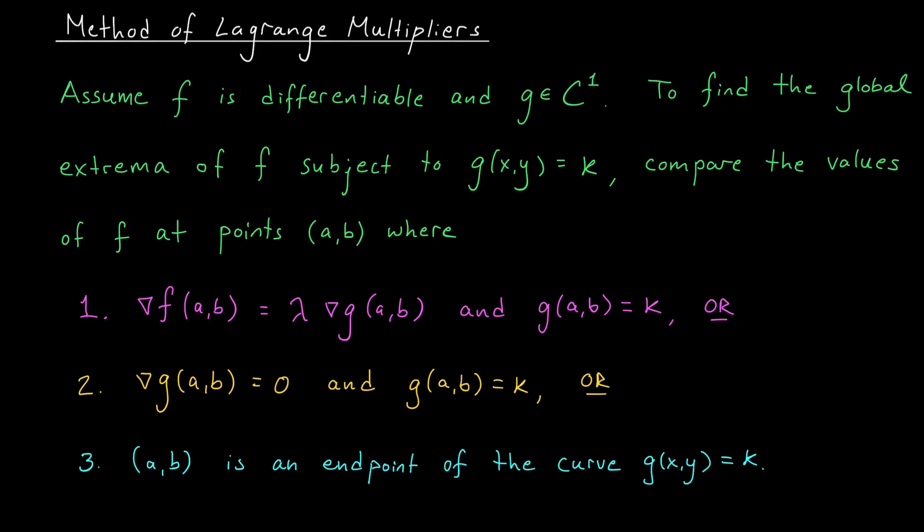then we're going to look for all points (a,b) where either the gradient of f is a multiple of the gradient of g, and of course the points lie on the constraint curve, or the gradient of g is zero and the point lies on the constraint curve, or the point (a,b) is an endpoint of our constraint curve. We compare the values of our function at all of the points we find in steps one to three. The largest is our global max, and the smallest is our global min.